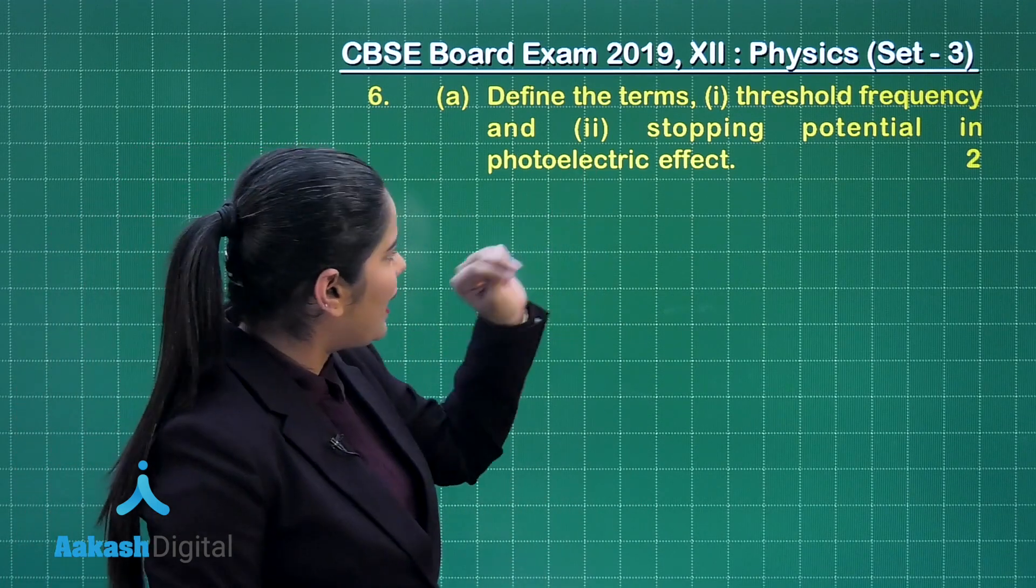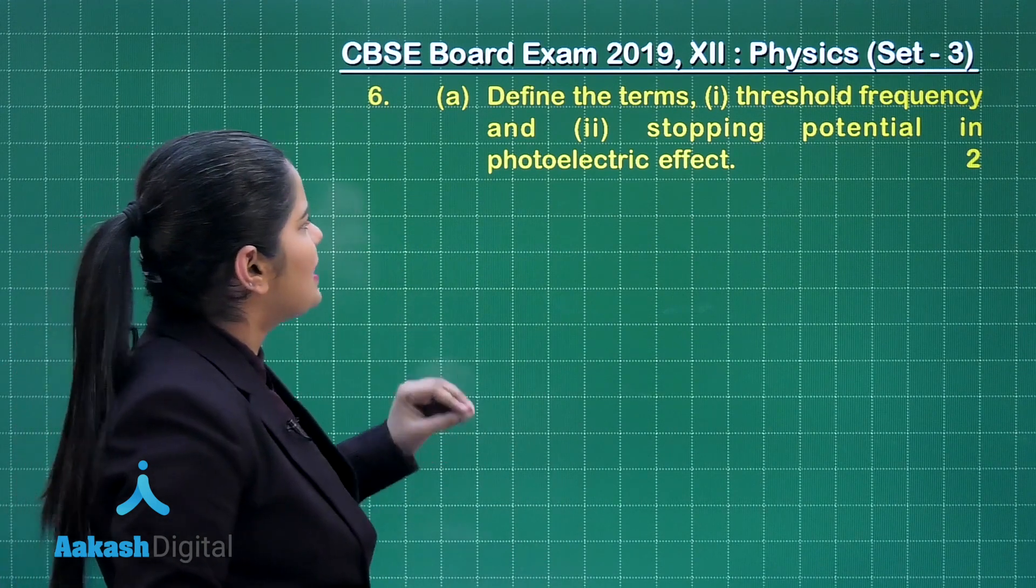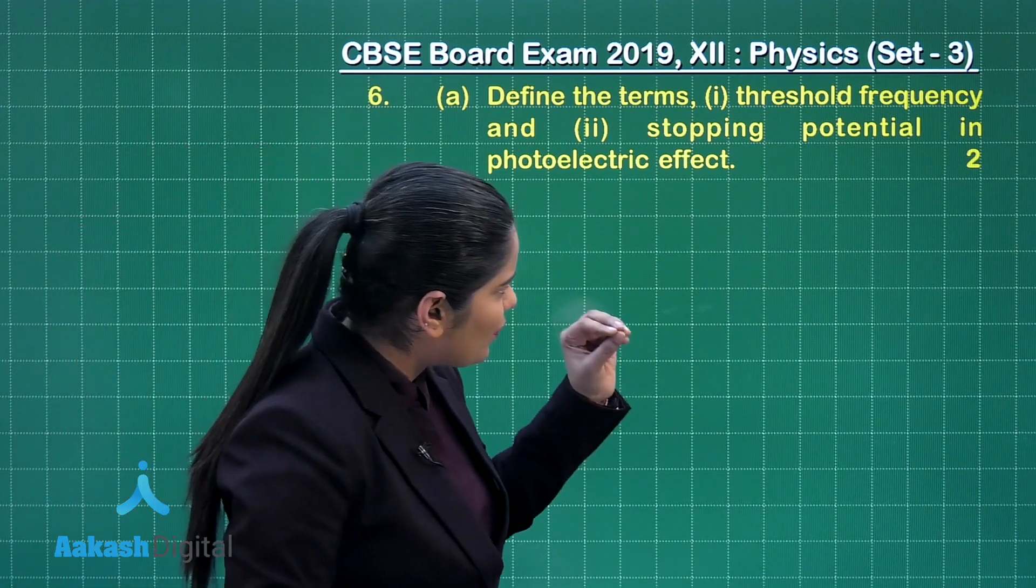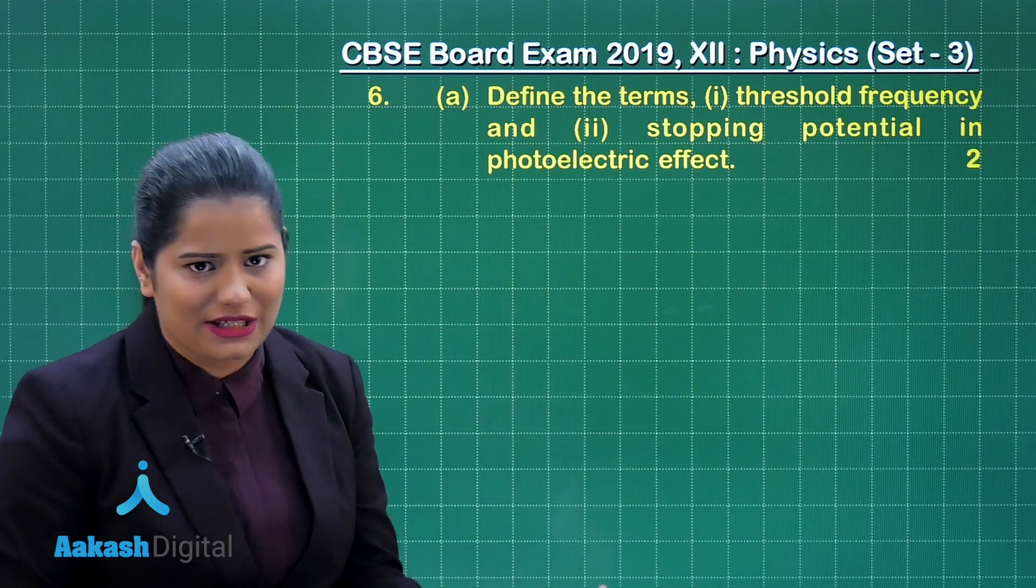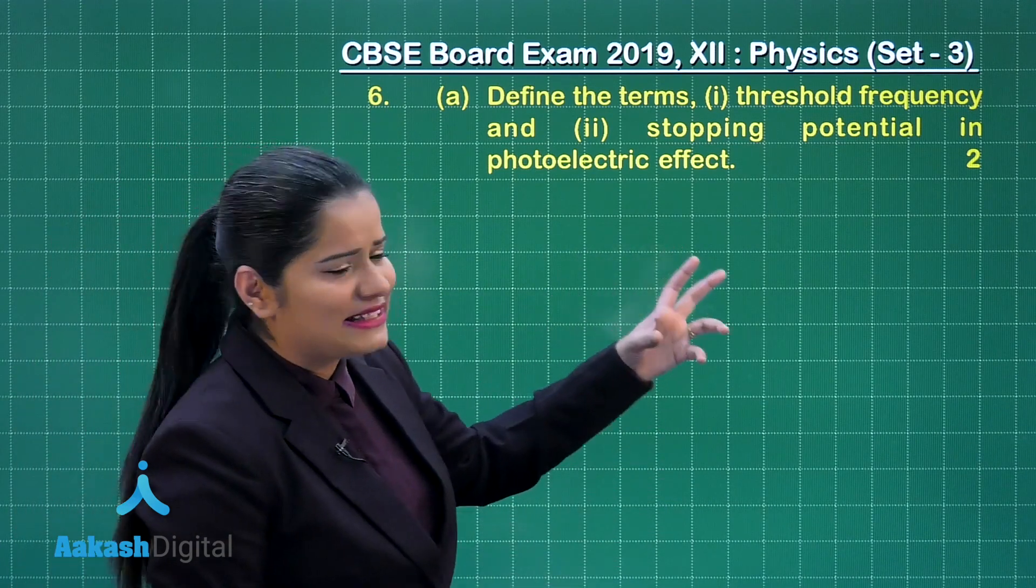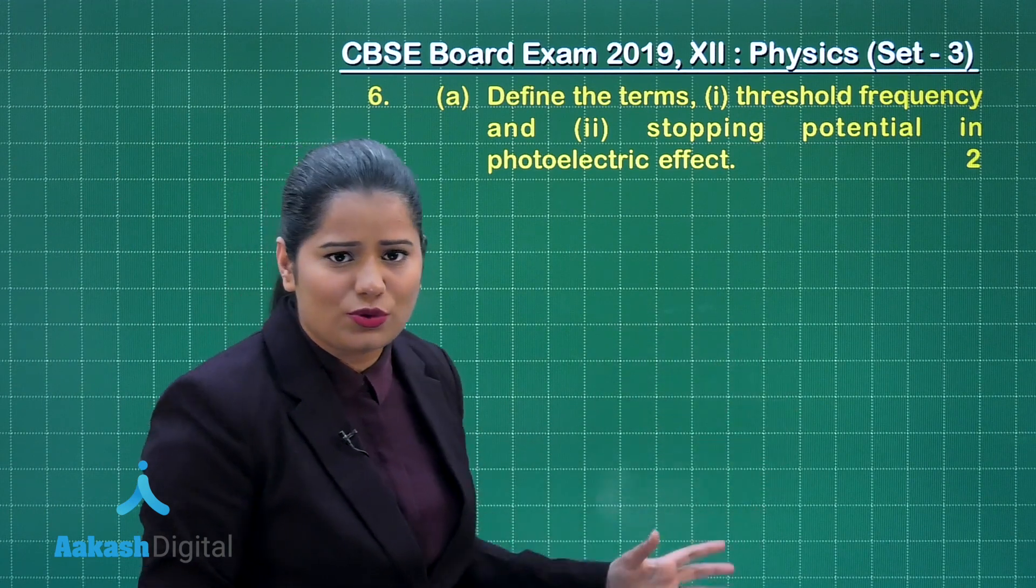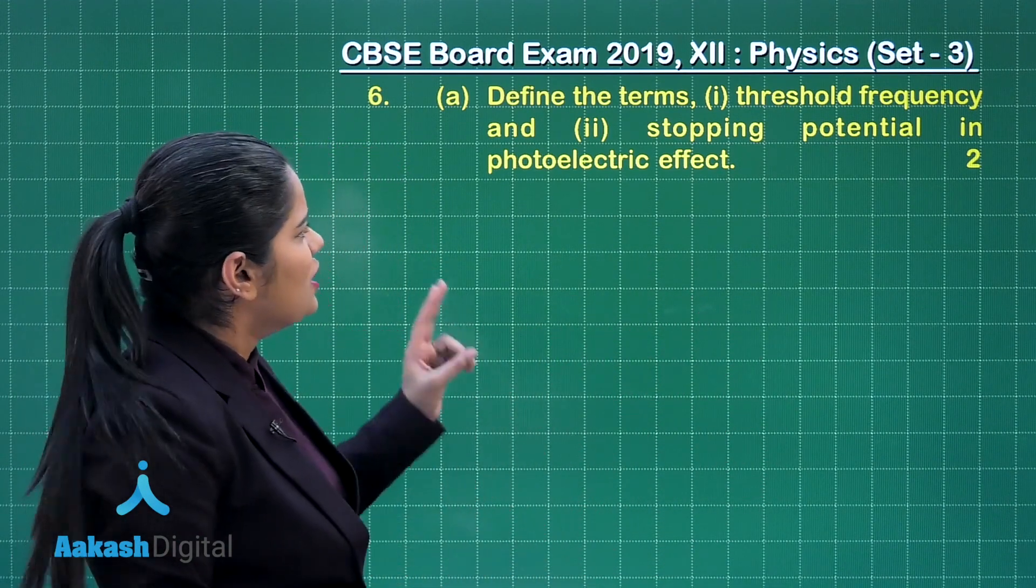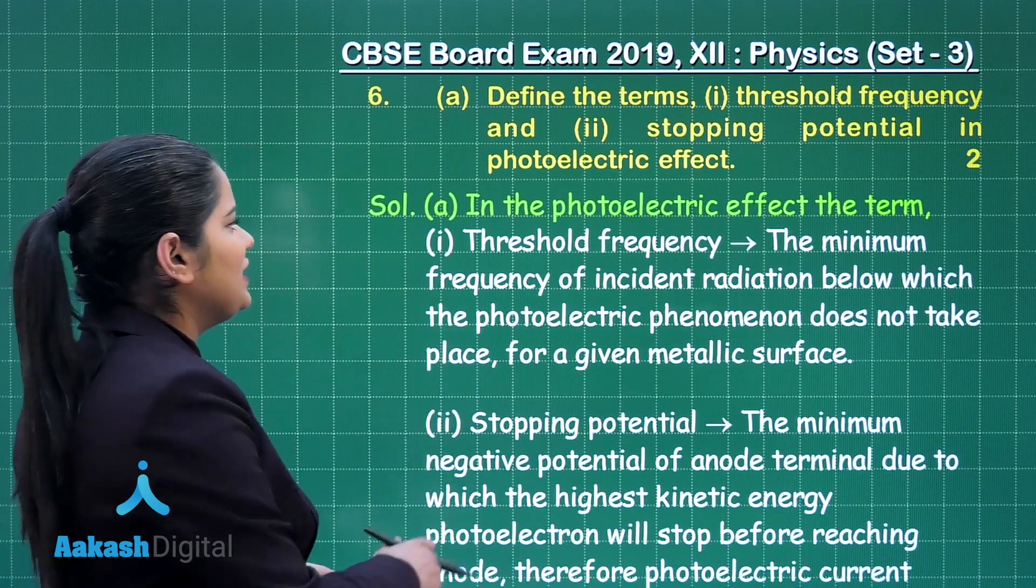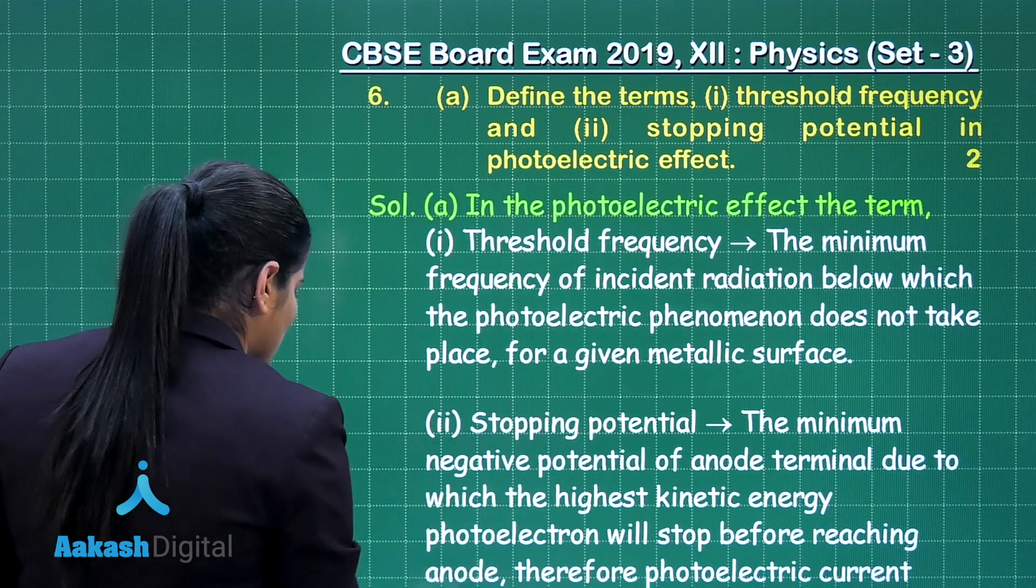So here I have this part A, which wants us to define the terms threshold frequency and stopping potential in photoelectric effect. You have already seen the solution for the threshold frequency which is similar to question number 2 that we have discussed. So if you write the solution, you need to write down the definition of these two.